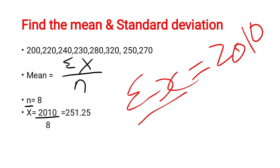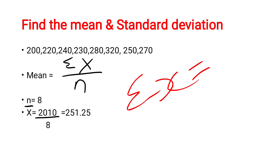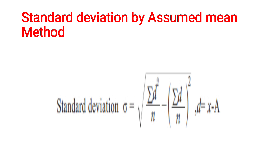After finding the mean, you can find standard deviation based on the actual mean. But in this video I am teaching the assumed mean method. Whichever is easy for you, you can calculate — the answer will be the same either way. The formula for the assumed mean method is: σ = √(Σd² / n − (Σd / n)²), where d = x − A and A is the assumed mean.